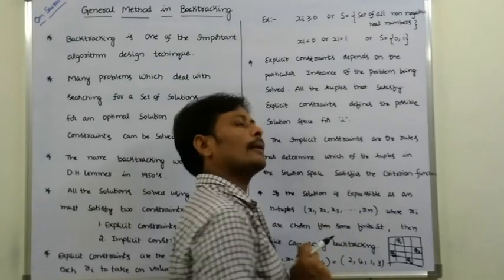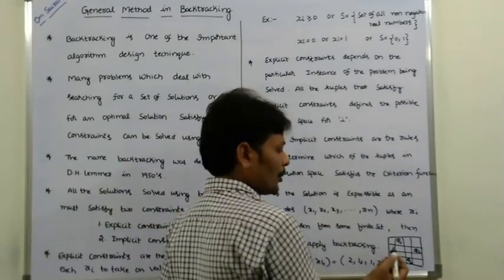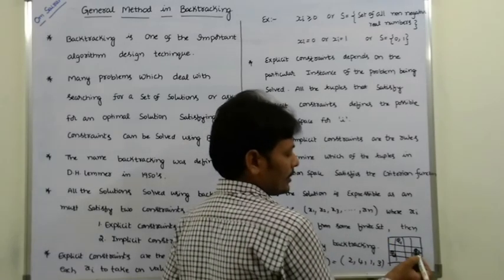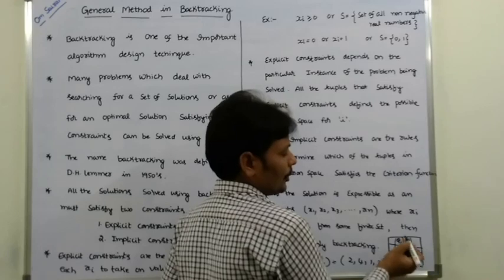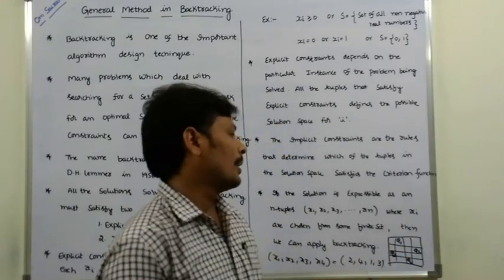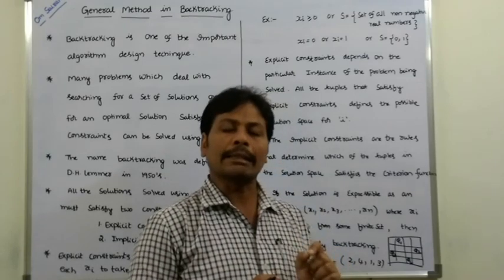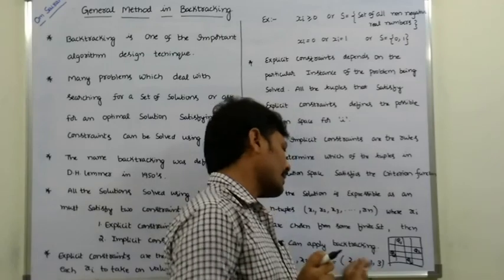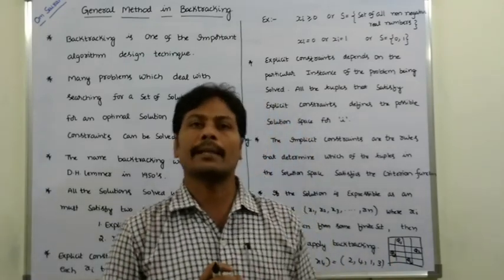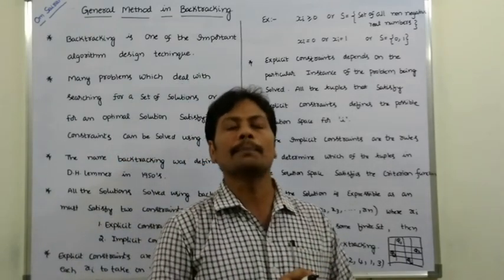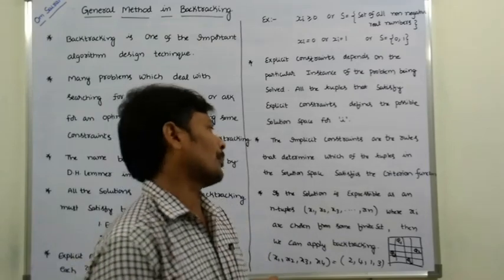Implicit constraints define which tuples in the solution space satisfy the criterion function. In the 4-queens problem, the implicit constraints are: no two queens are on the same column, and no two queens are on the same diagonal. Q1 is at column 2, Q2 at column 4, Q3 at column 1, Q4 at column 3 — no two queens share a column or diagonal. These are the implicit constraints for the 4-queens problem.